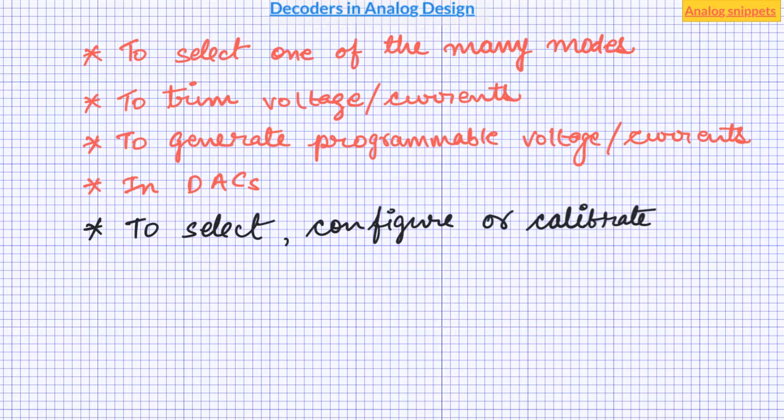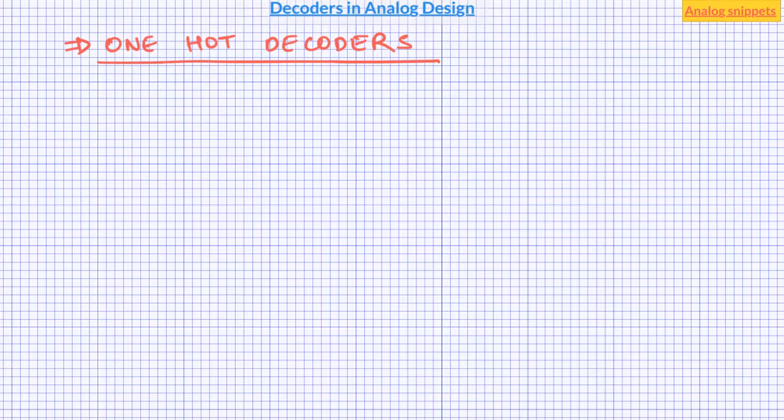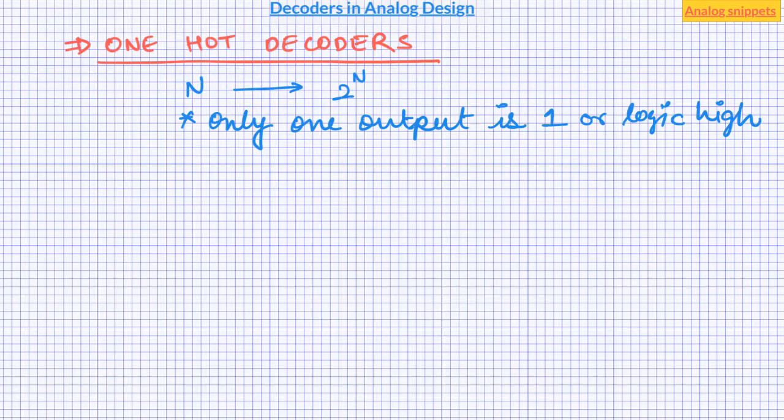So let's start with one of the most obvious decoders. One-hot decoder generates 2 to the power n outputs from n inputs. And for any given combination only one of the output is one. And that is why it is called one-hot.